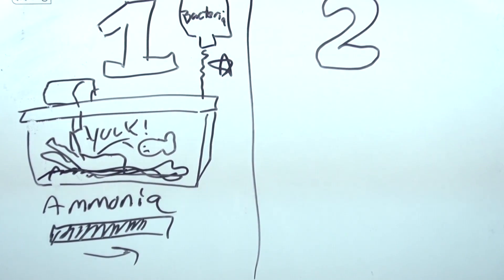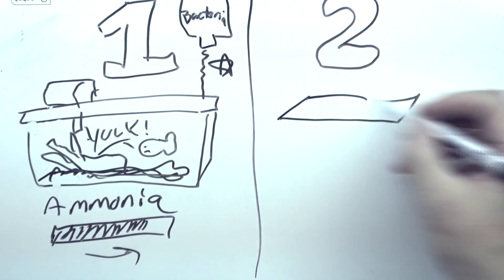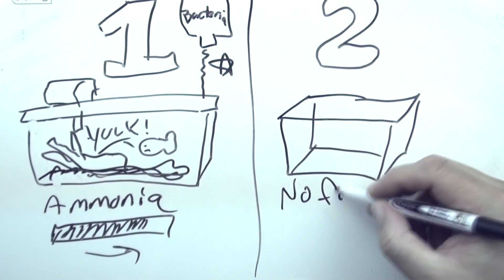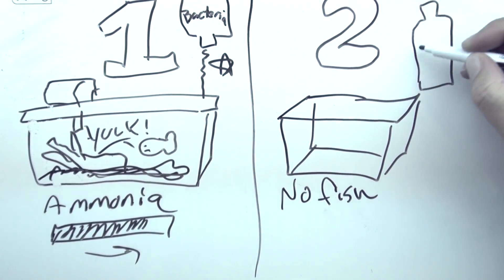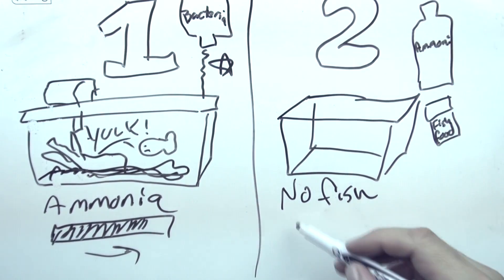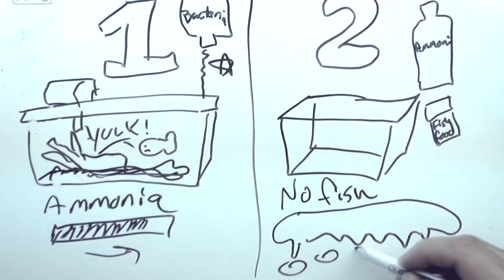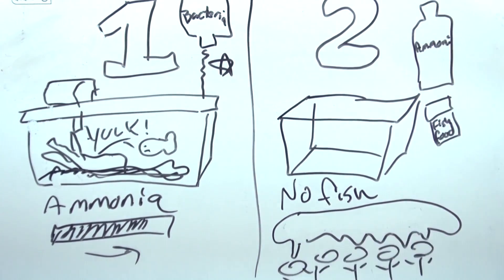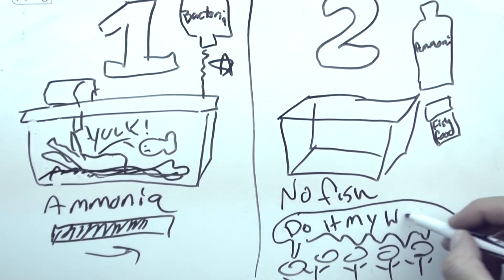The other option is called fishless cycling, and you can add ammonia to the water or you can add some fish food. To tell you the truth, there's a bunch of different recipes, even from adding old filters and other things to the water. And there's a lot of opinions on the internet about which way is correct.